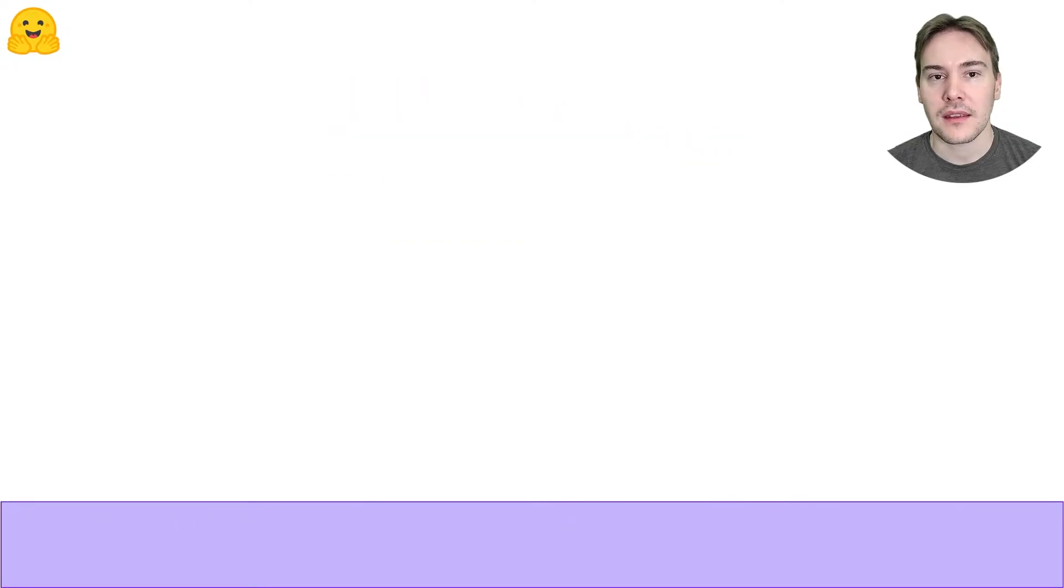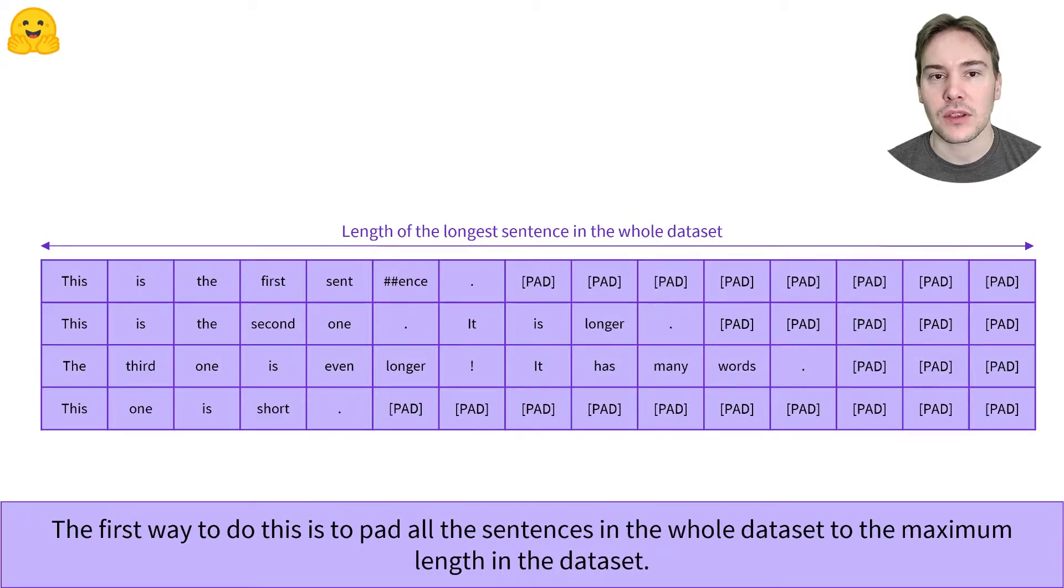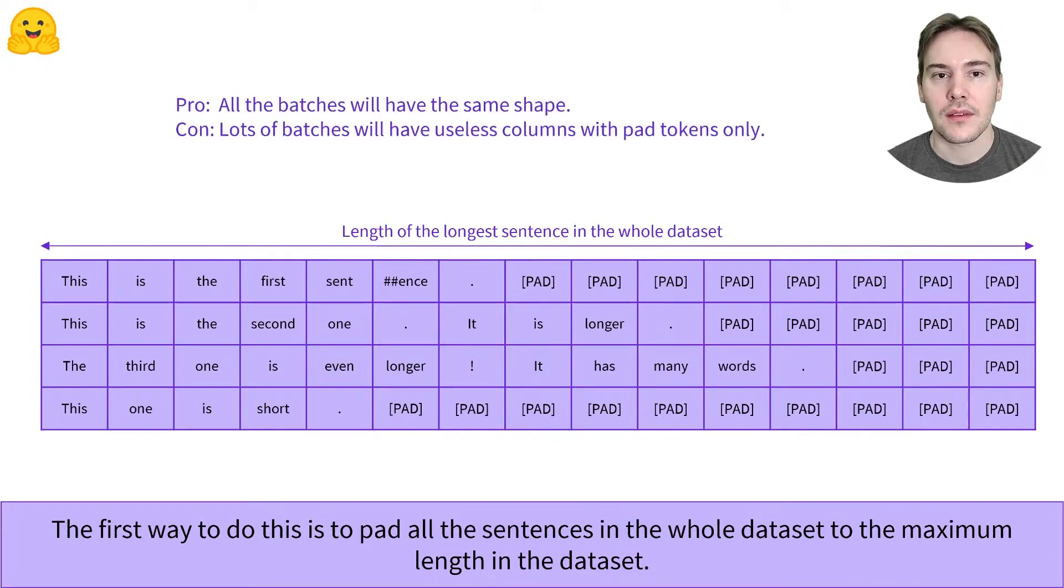When dealing with a whole dataset, there are various padding strategies we can apply. The most obvious one is to pad all the elements of the dataset to the same length, the length of the longest sample. This will then give us batches that all have the same shape, determined by the maximum sequence length.